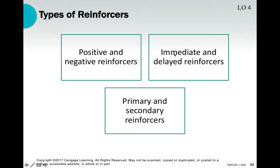There's also immediate versus delayed reinforcement — do you get your reward immediately or is it delayed? Paychecks are an example of delayed reinforcement. Primary reinforcers satisfy basic biological needs like food, sleep, and sex. Secondary reinforcers are things that allow us to acquire primary reinforcers — money, for example, is a secondary reinforcer you use to pay rent and buy food, meeting the primary reinforcers of shelter and food.